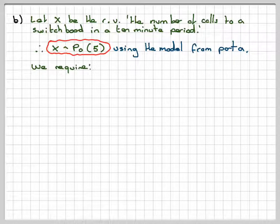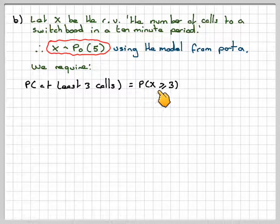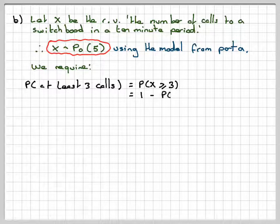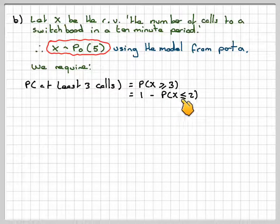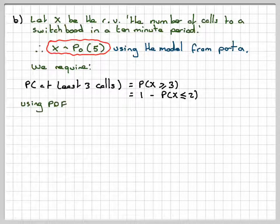We are required to find the probability of at least three calls. So that's three or more. So that's the probability of x being greater than or equal to 3. So that will be 1 minus the probability of x is less than or equal to 2 if we are going to use the CDF. Using the PDF,